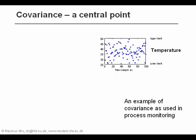Another example, and an example on how this principle is used, for example, in process monitoring. Here we have a variable measured at different times — the temperature — and we can see that it varies between 25 and 50 degrees. That's the normal range for this process, and as long as all the measurements are within those limits, the process is said to be in control.